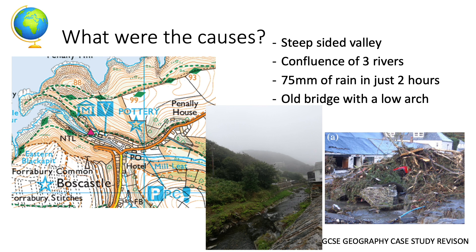So what were the causes of the flood? As you can see in the map, the contour lines surrounding Boscastle are very close together, meaning the area is both high and steep. Boscastle sits at the bottom of a steep-sided valley, as you can see in the second picture, which means there are high levels of surface runoff from the surrounding hills. Boscastle is also found at the confluence of three rivers, meaning three rivers meet there.